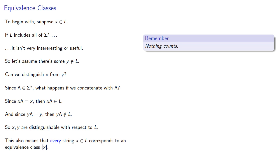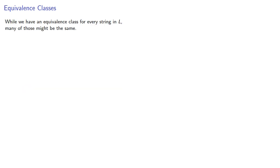This also means that every string in our language corresponds to an equivalence class generated by the string itself. Now while we have an equivalence class for every string in our language, many of those might be the same. So we might begin with one and see what others we need to include. Let's take a look at that next.